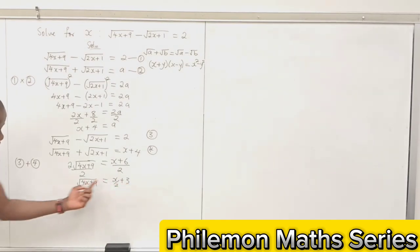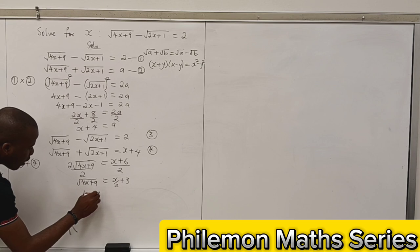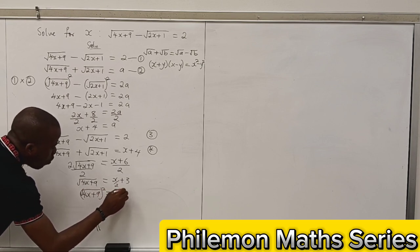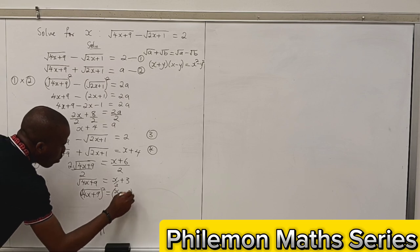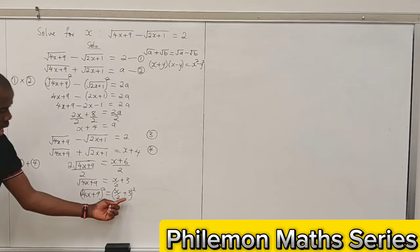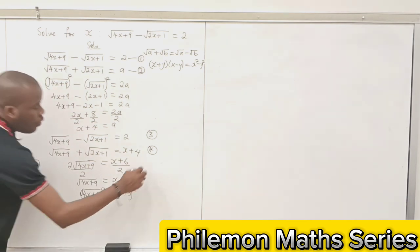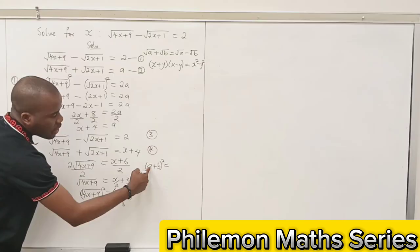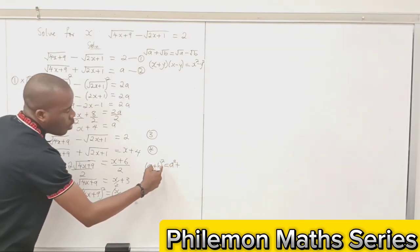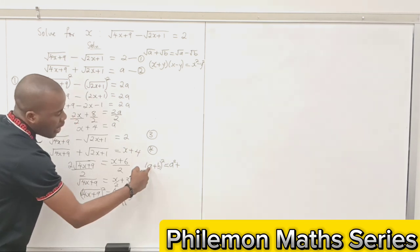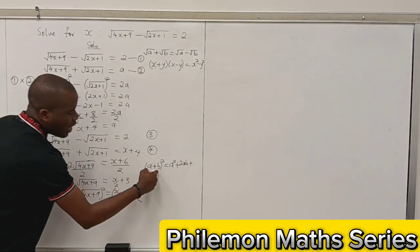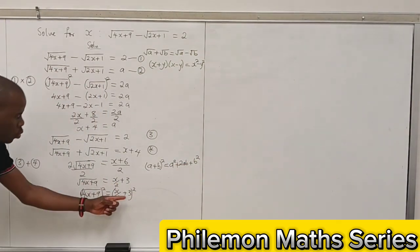Now I can square both sides to remove the root sign: 4x plus 9 equals (x over 2 plus 3) squared. How do we square this? If you have (a plus b) squared, this is simply a squared plus 2ab plus b squared. So squaring here, we will have x squared over 4, plus 2 times (x over 2) times 3 which is 3x, plus 3 squared which is 9.